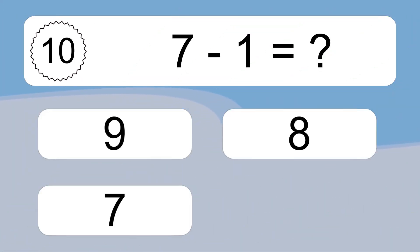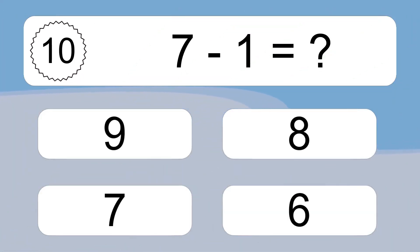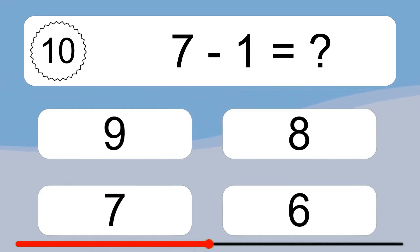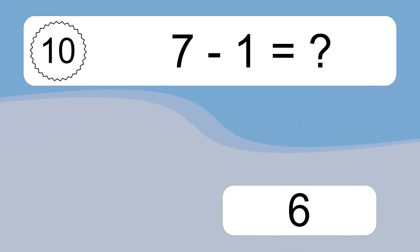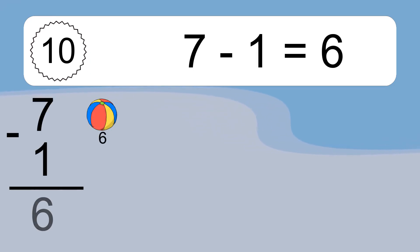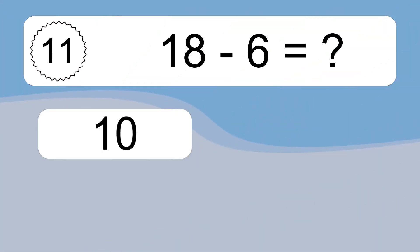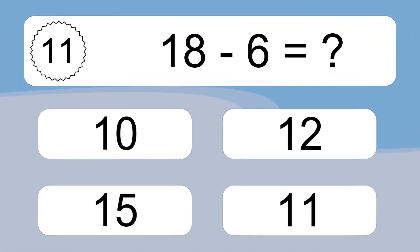7 minus 1 equals what? 7 minus 1 equals 6. Let's count it: 6.